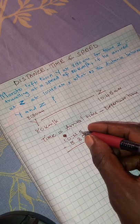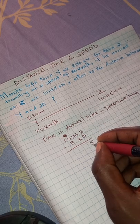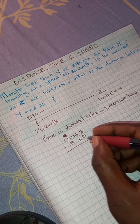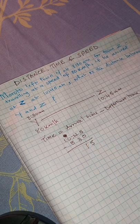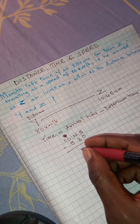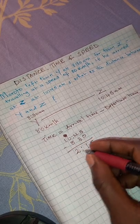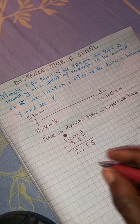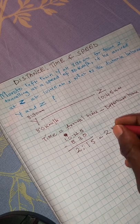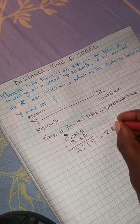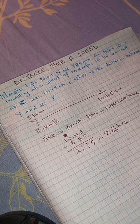10:45 AM minus 8:30 AM. So this is 5 minus 0, you get 5. 4 minus 3, you get 1. 10 minus 8, you get 2. So he spent 2 hours 15 minutes, which is the same as 2 and a quarter hours when expressed as a fraction.